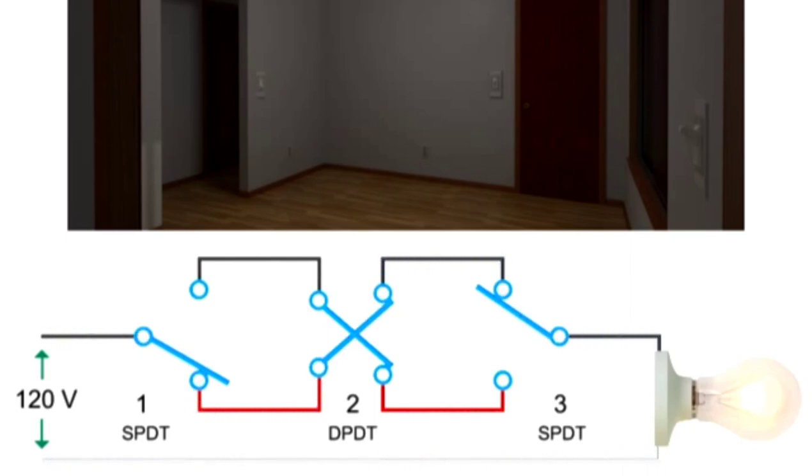If we change the position of both switches one and three while switch two remains in the crossover position, the current will still flow, this time from the black wire to the red wire to complete the circuit and light the bulb.